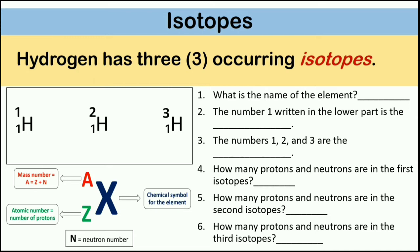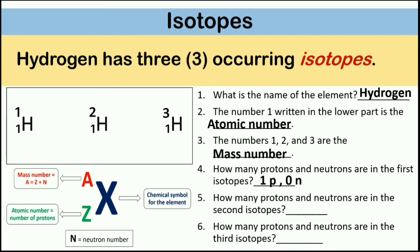Let's answer number 1: What is the name of the element? The element symbol is the letter H. The answer is hydrogen. Number 2: The number 1 written in the lower part is the atomic number. Number 3: The numbers 1, 2, and 3 are the mass numbers. Number 4: How many protons and neutrons are in the first isotope? The answers are 1 proton and 0 neutrons.